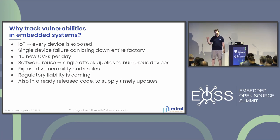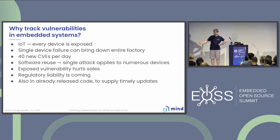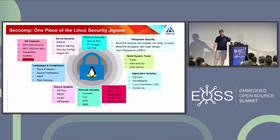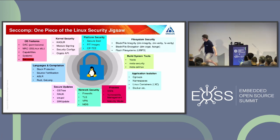On the other hand, we also have regulations coming up. In the EU, regulations are being discussed that, among other things, require products to be to some extent secure. What is important is that we want to track vulnerabilities after the product has been sold already, to be able to fix things after the fact. It's also important to realize that tracking vulnerabilities is one piece of the security jigsaw — a very small piece of the whole, but a necessary piece.